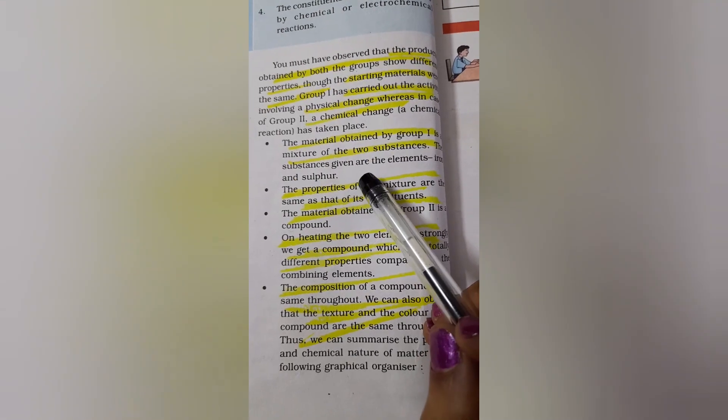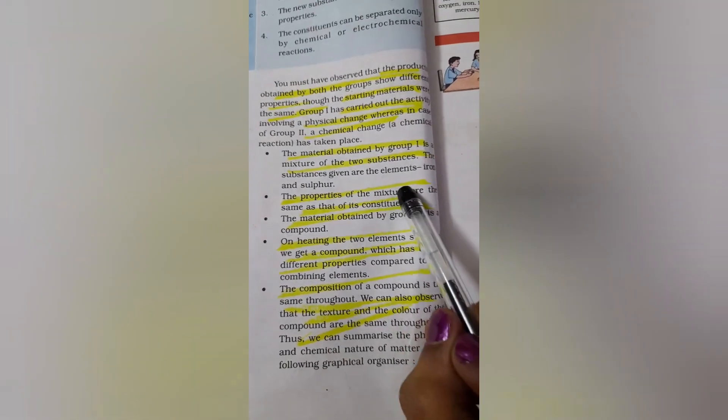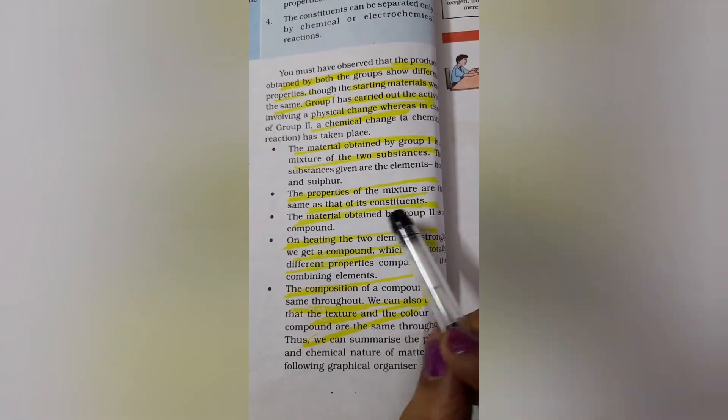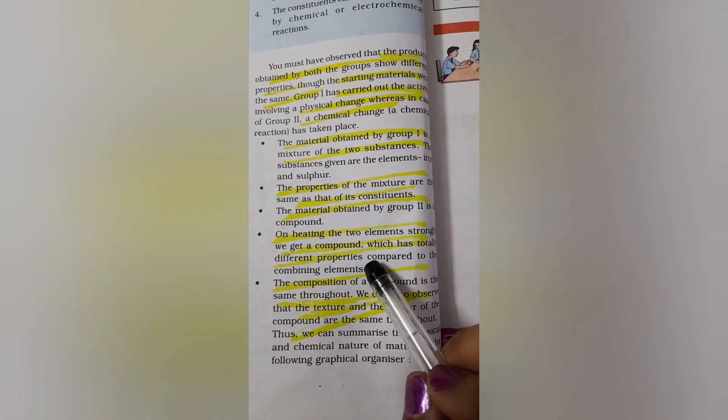The second case it is a chemical change. The material obtained by group 1 is a mixture of the 2 substances. What were the 2 substances? Iron and sulfur. The properties of mixture are same as that of the constituents.